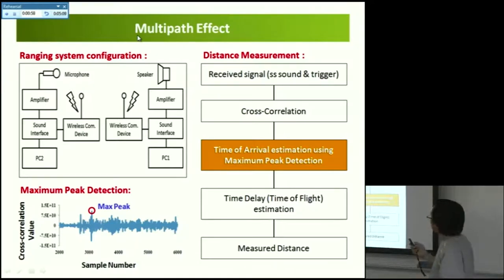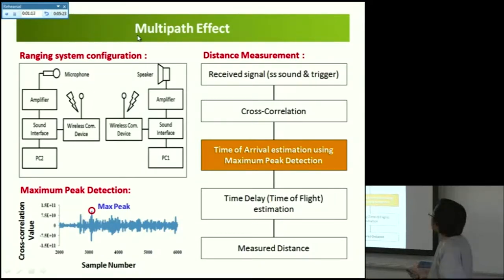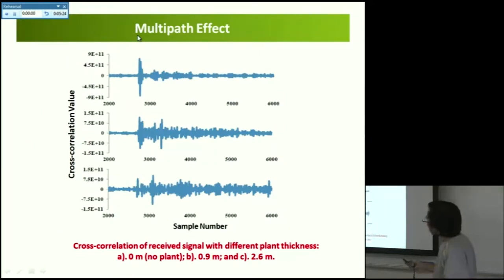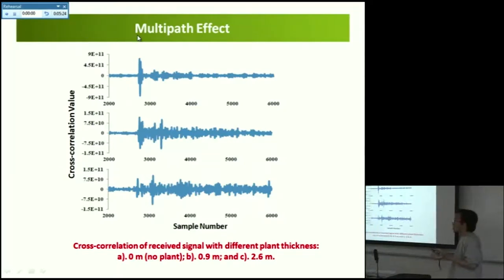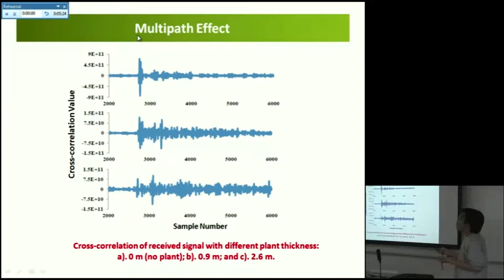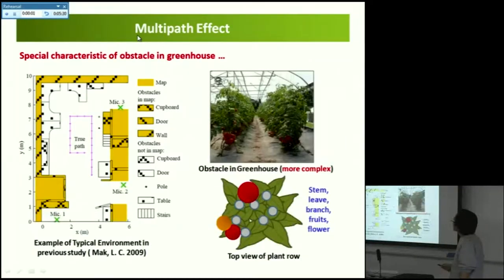The problem is that in the current system we use maximum peak detection. We detect the maximum peak from the cross-correlation and estimate the time from it. But we can see from the results that the direct path should be the first peak — however, in this case the maximum peak is not the first one. So this leads to wrong detection and will generate some error if we use the current system.